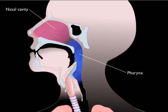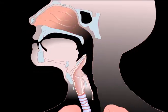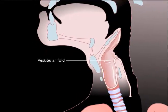Leaving the pharynx, air enters the larynx, where two pairs of ligaments, together with the mucosa covering them, form the vestibular and vocal folds. These folds help prevent foreign particles, including food, from entering the lower respiratory system. The vocal folds are also known as the true vocal cords because they produce sound when air passes between them.